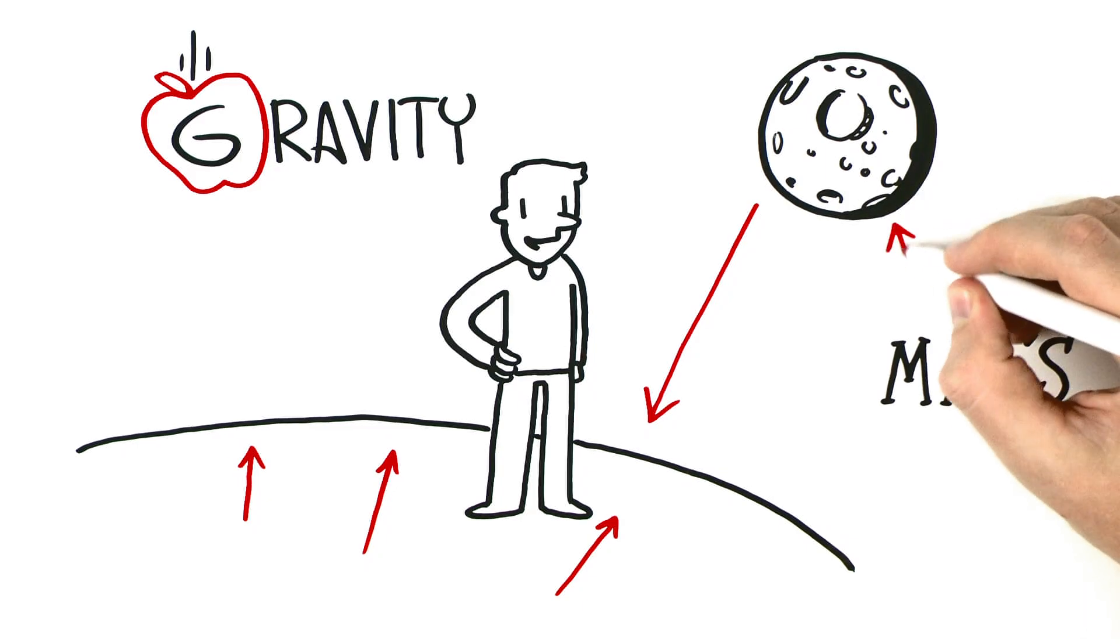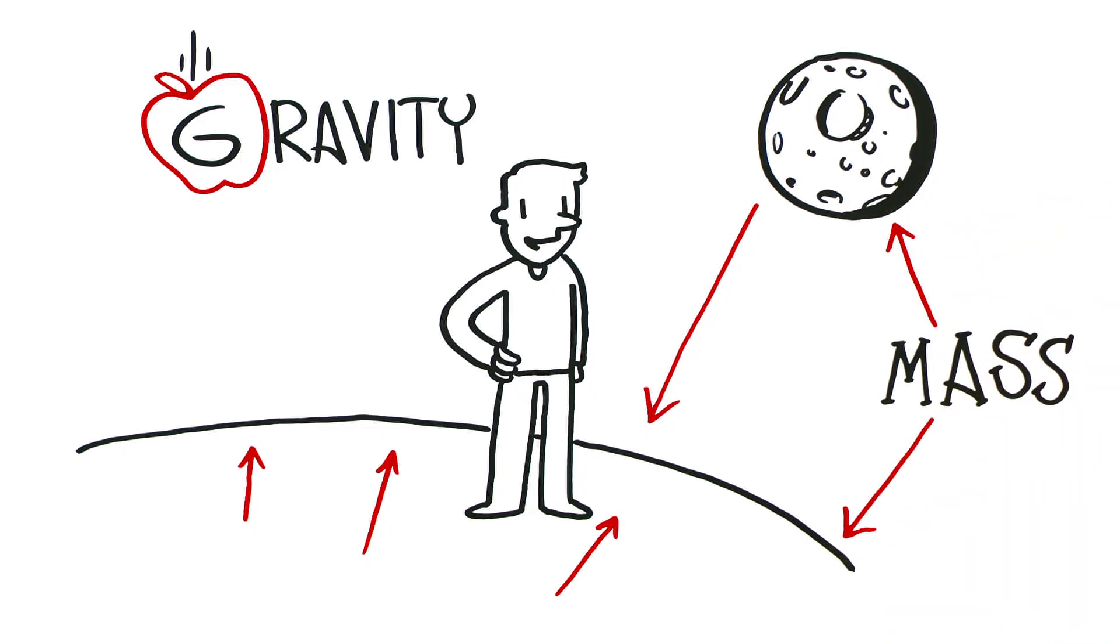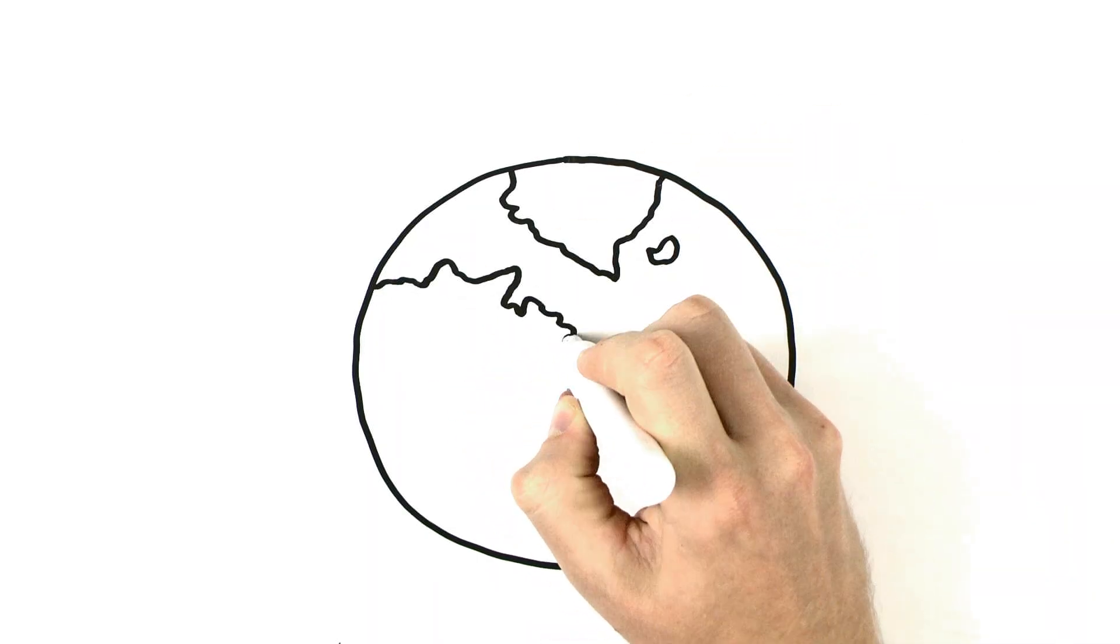Mass. That's simply the amount of stuff that makes up an object. The more mass something has, the more gravity it has.